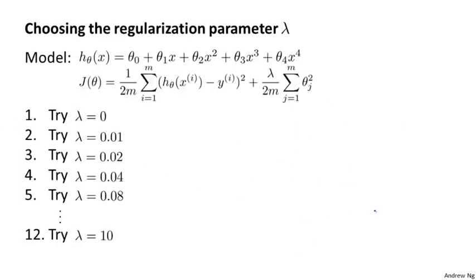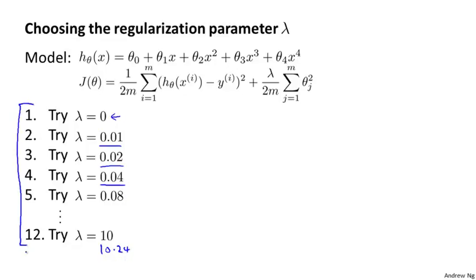This is how we can automatically choose the regularization parameter lambda. What I usually do is have some range of values of lambda I want to try out. I might consider lambda equals 0.01, 0.02, 0.04, and so on, stepping these up in multiples of two until some larger value — maybe up to around 10. This gives me maybe 12 different models that I'm trying to select amongst, corresponding to 12 different values of the regularization parameter lambda.